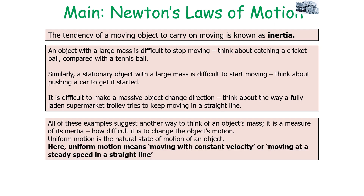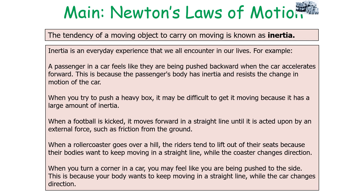Uniform motion means moving with a constant velocity, or moving at a steady speed in a straight line. This idea of inertia is an everyday experience. A passenger in a car feels pushed backwards when the car accelerates forward because the passenger's body has inertia and resists the change in motion. A heavy box is difficult to get moving because it has a large amount of inertia. When a football is kicked, it moves forward in a straight line until acted upon by an external force such as friction. When a roller coaster goes over a hill, riders tend to lift out of their seats because their bodies want to keep moving in a straight line due to inertia. When you turn a corner in a car, you feel pushed to the side because your body wants to keep moving in a straight line.